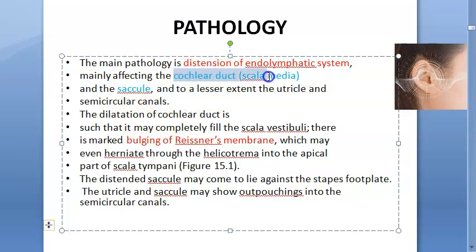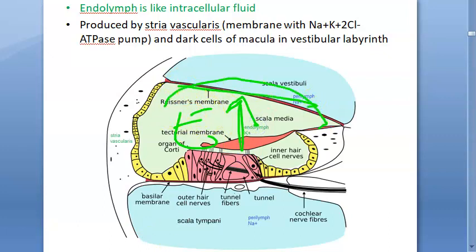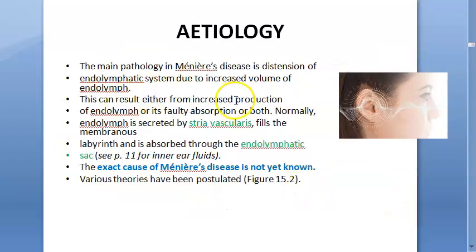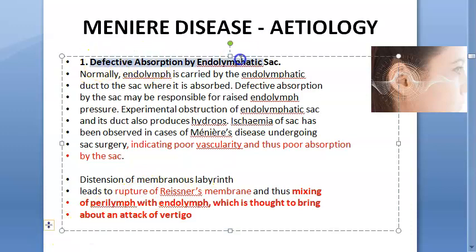The condition also causes fluctuating sensorineural hearing loss, tinnitus, and aural fullness. The pathology involves distension of the endolymphatic system — the scala media in the cochlea, the saccule, and part of the utricle. As endolymph increases, Reissner's membrane bulges and finally ruptures, mixing perilymph and endolymph, triggering a vertigo attack with hearing loss.